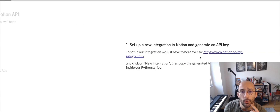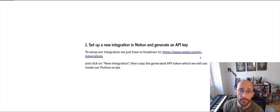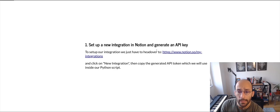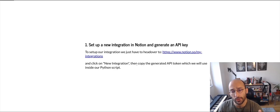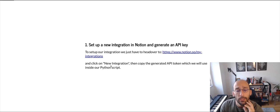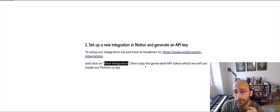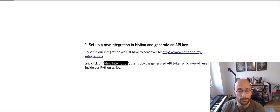For setting up an integration in Notion, all you need to do is head to notion.so/my-integrations, click on New Integration, and then copy the generated API token which we're going to use inside our Python script.